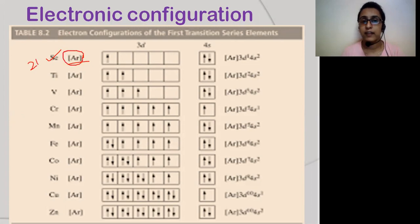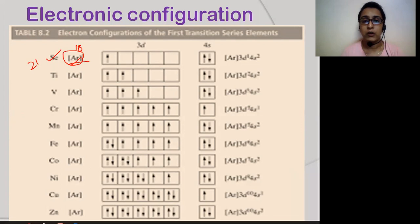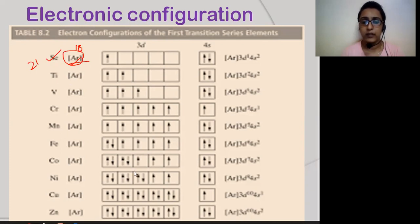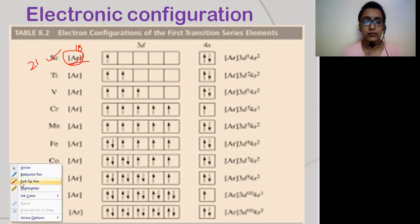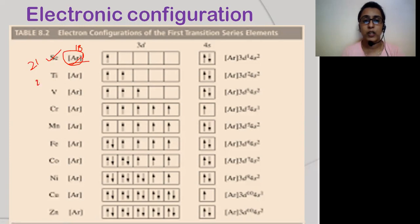It starts from scandium with atomic number 21. Here we write the preceding inert gas, that is argon, whose atomic number is 18. That accounts for 18 electrons, leaving three electrons which go to the 3D orbital. After that comes titanium (atomic number 22). You just keep adding one electron progressively to the 3D orbital — 4S2 is already there.